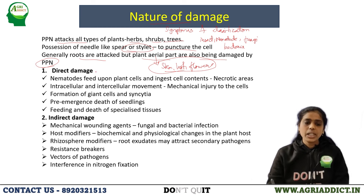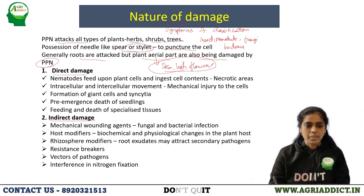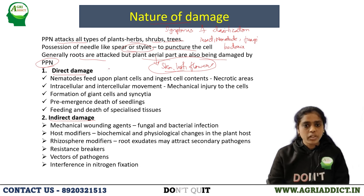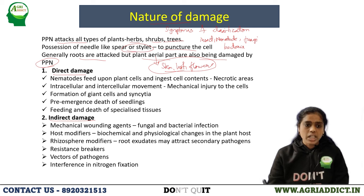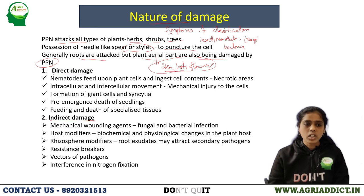The damage caused by nematodes has been broadly classified into direct damage and indirect damage. Direct damage mainly affects plants in terms of loss of yield, and symptoms like wilting, stunting, and yellowing can also be seen. In case of indirect damage, they act as modifiers and wounding agents, which help the entry of other secondary plant pathogens.